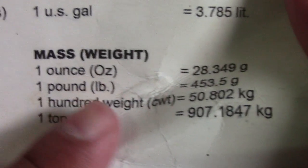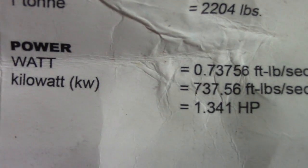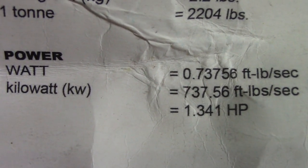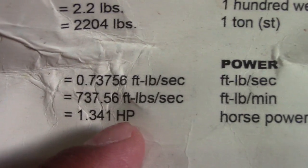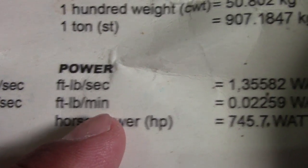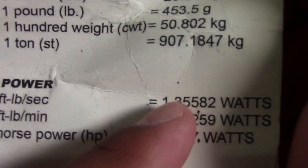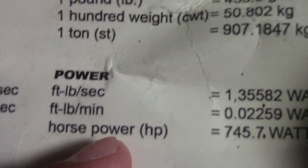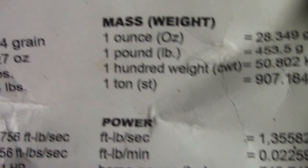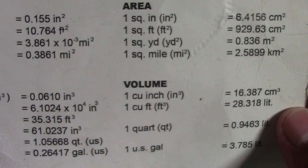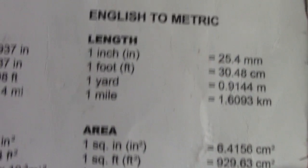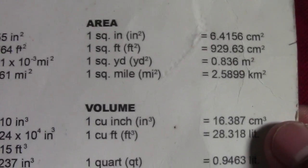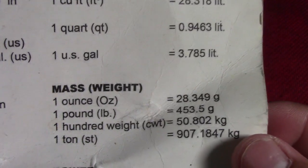Next is power — pound per second and horsepower (HP). Just multiply by the given factor if you want to convert to watts. This is a very useful conversion table covering length, area, volume, mass/weight, and power.